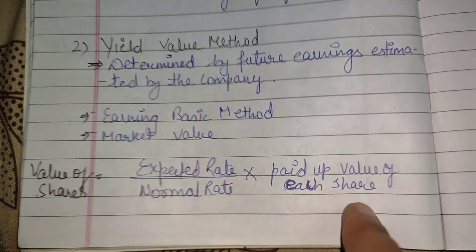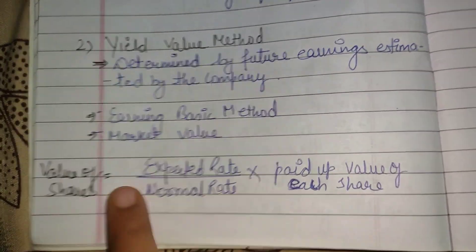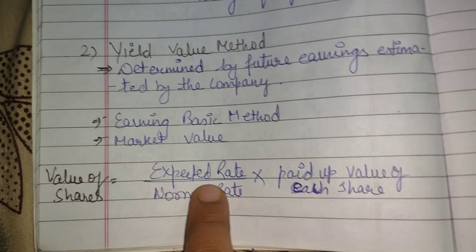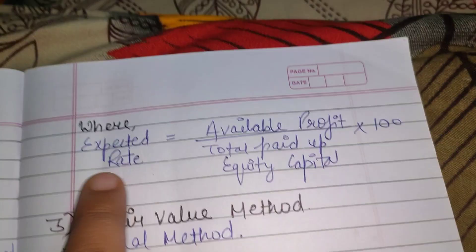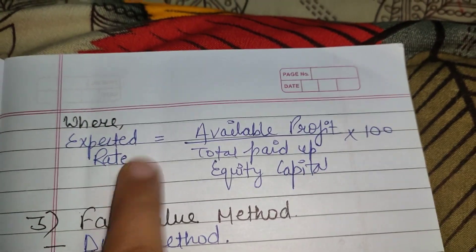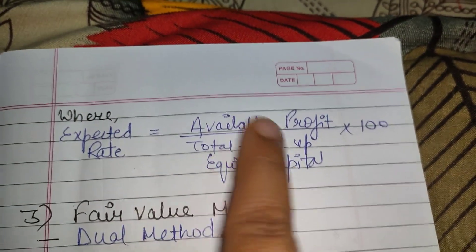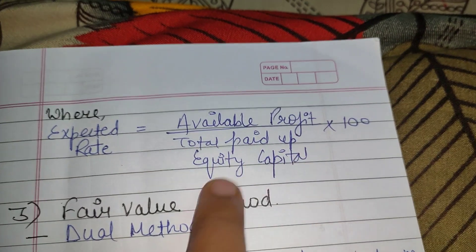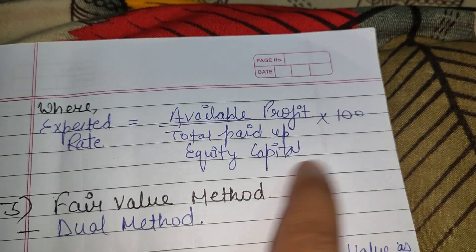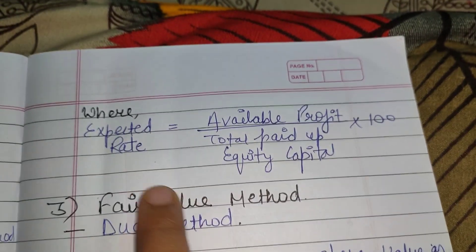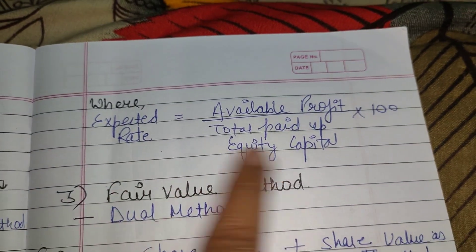The Yield Value Method uses an earnings-based approach. The formula is: Value of shares equals Expected Rate divided by Normal Rate, multiplied by the Paid-up Value of each share. The Expected Rate is calculated as: Available Profit divided by Total Paid-up Equity Capital, multiplied by 100.